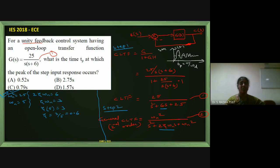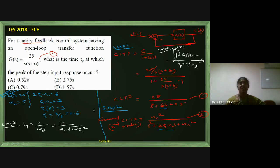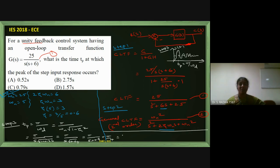The formula for peak time is tp = π/ωD, where ωD = ωn·√(1 - η²). With η = 0.6, η² = 0.36, so ωD = 5·√(1 - 0.36) = 5·√0.64 = 5 × 0.8 = 4. Therefore tp = π/4.